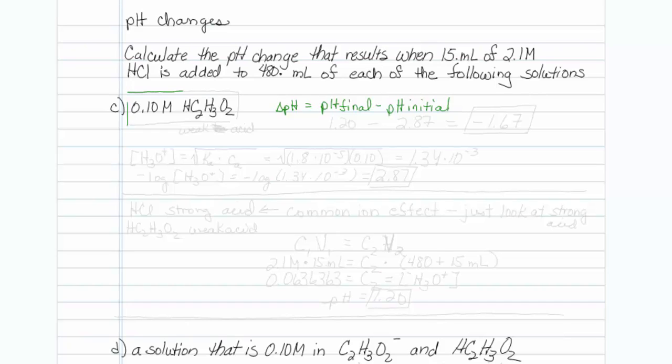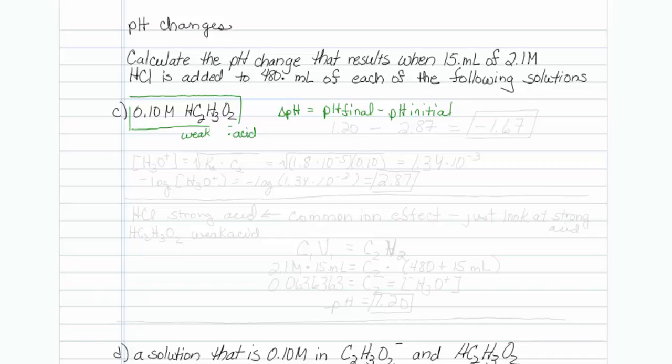For starters, we have just weak acid in solution. Well, isn't there the shortcut formula we can use sometimes, where if we have a weak acid alone in solution, the hydronium concentration should be equal to the square root of the Ka times the original acid concentration. So I will use my handy dandy pH table and look up the Ka of acetic acid, and it turns out to be 1.8 times 10 to the minus 5.